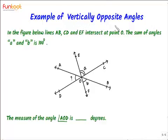Example of vertically opposite angles. In the figure below, lines AB, CD and EF intersect at point O. The sum of angles A and B is 100 degrees.